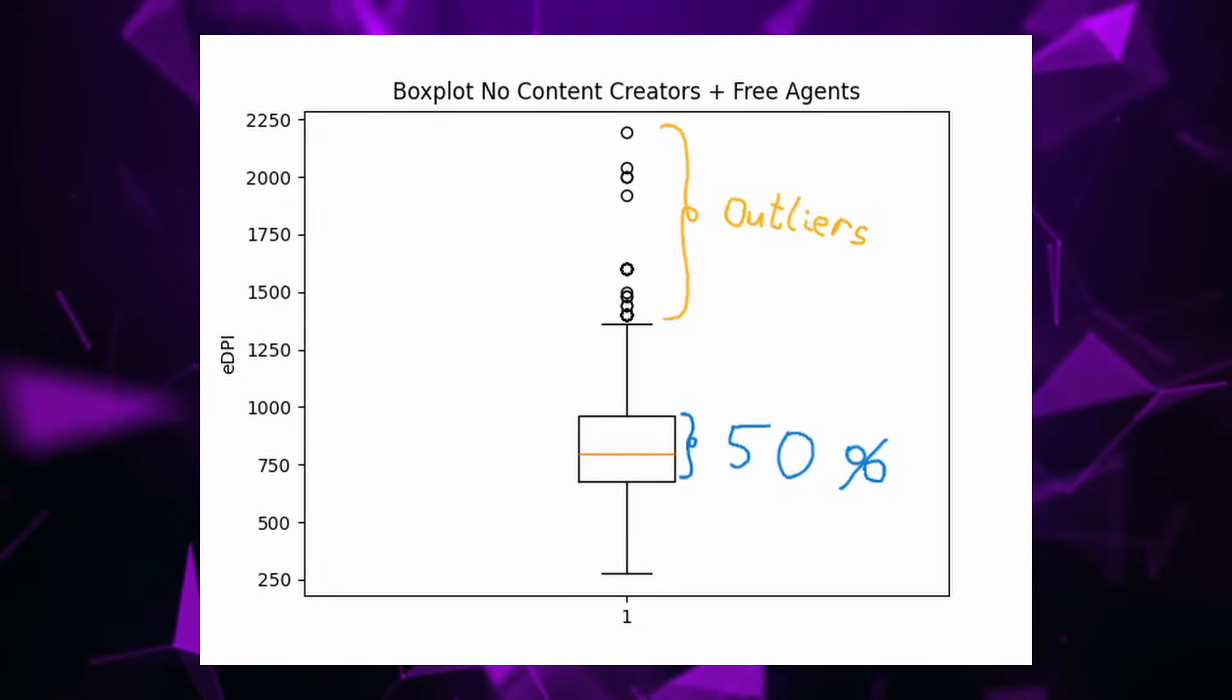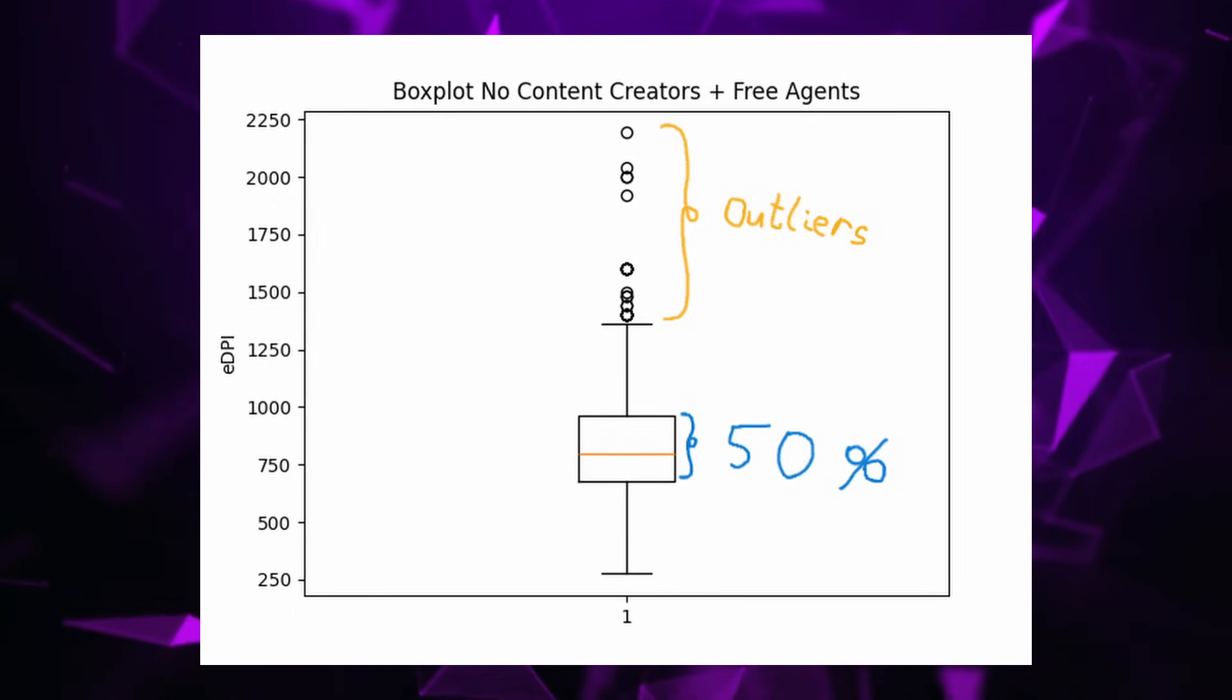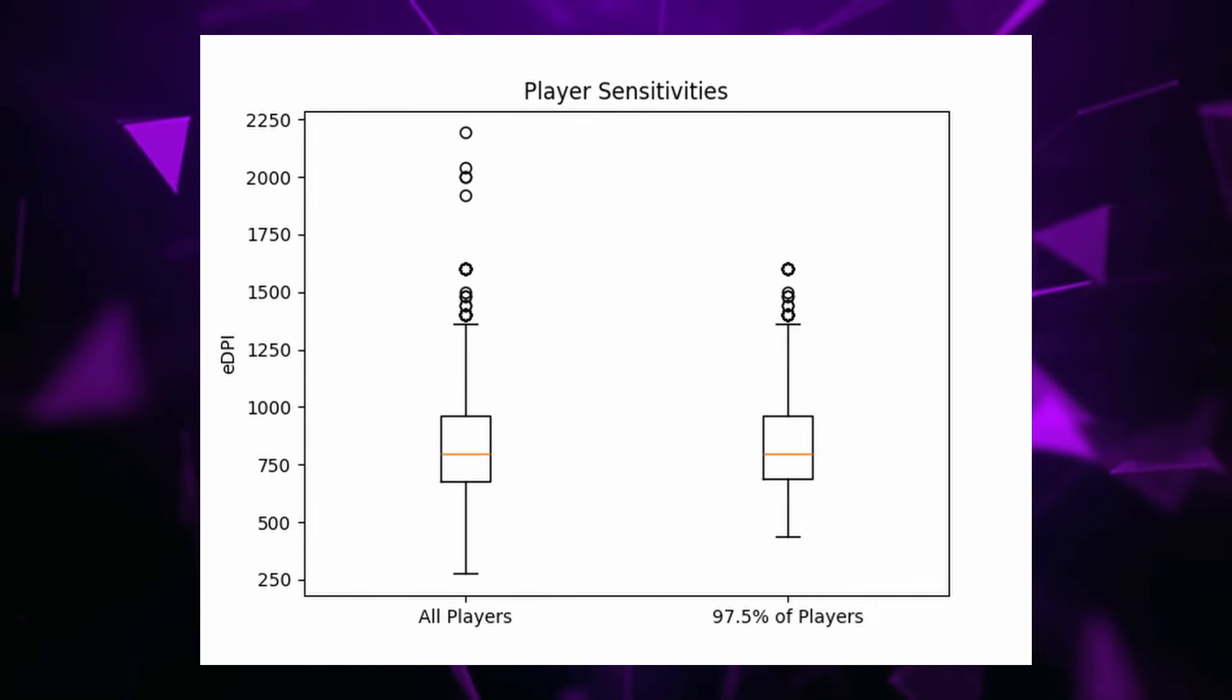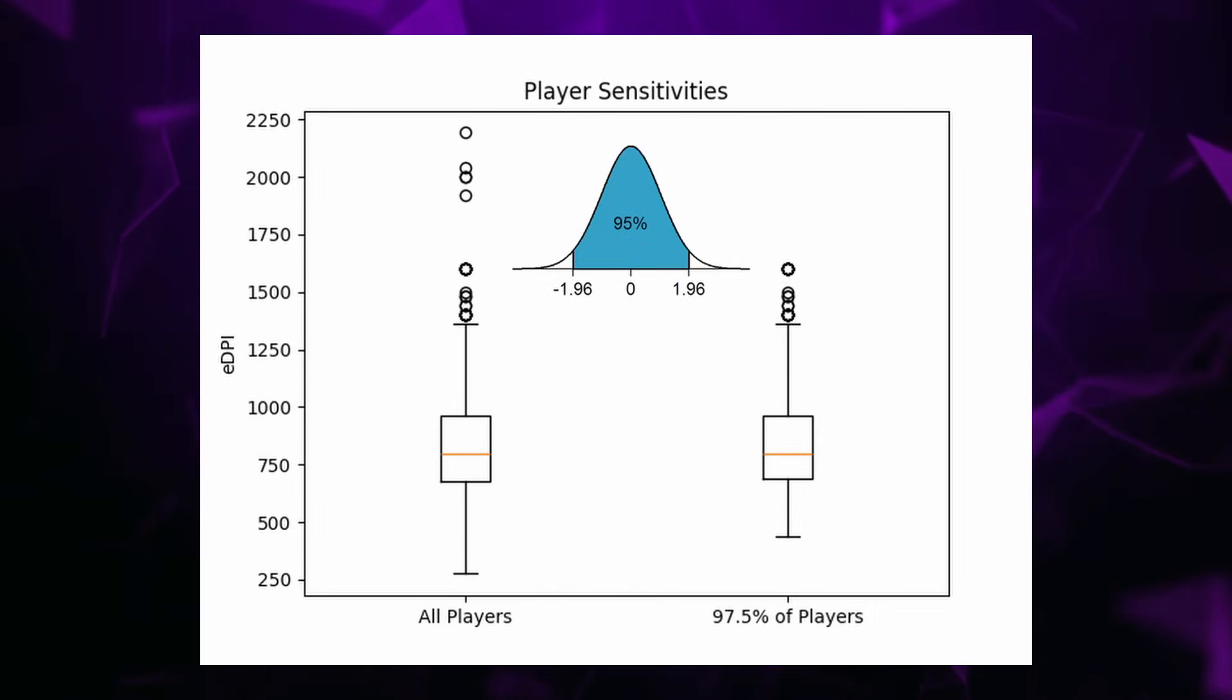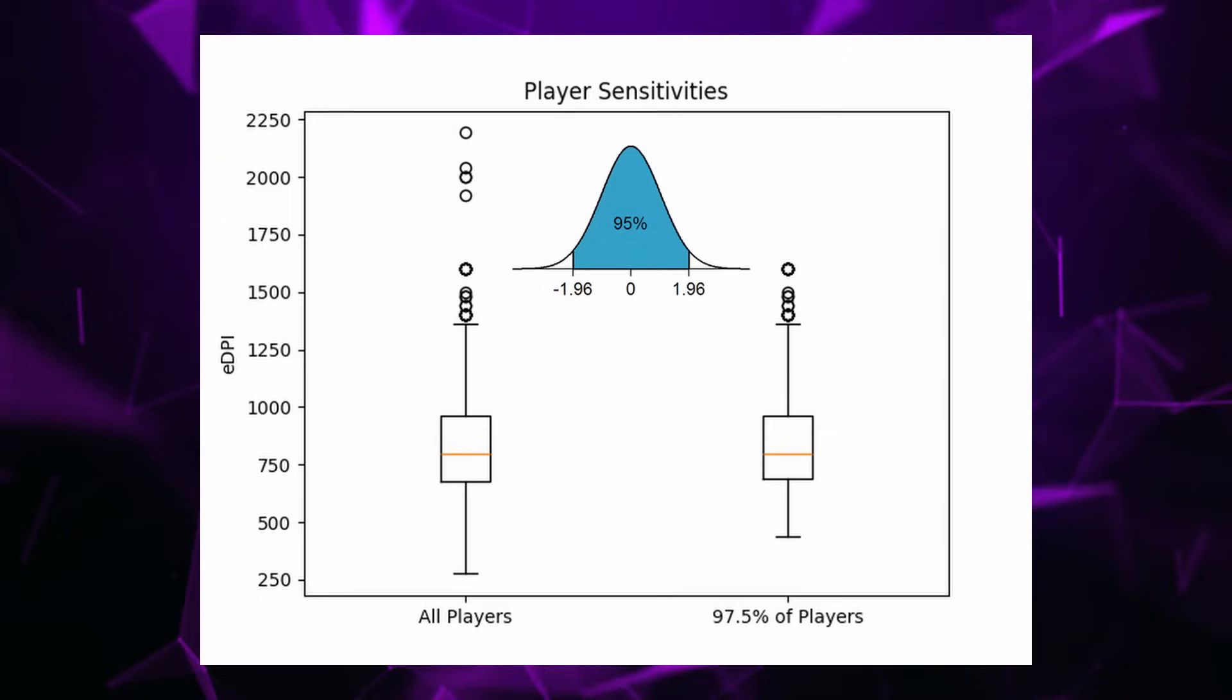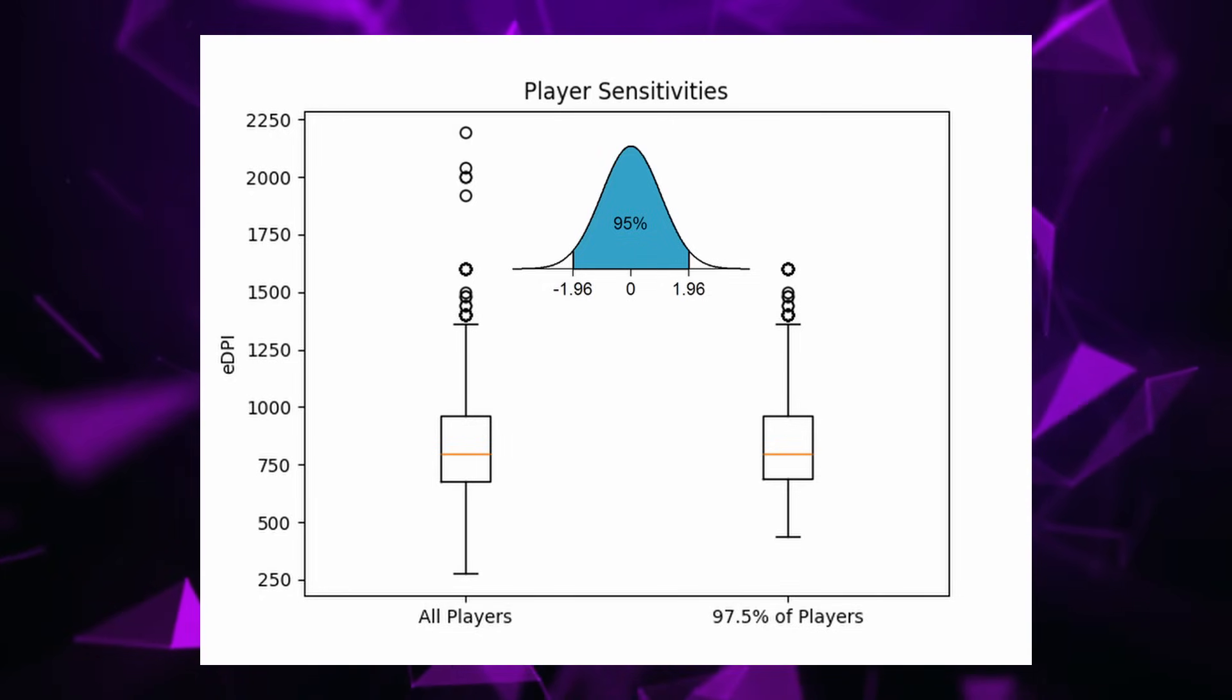What we can see here is some heavy outliers towards the upper end, which prompted me to pre-process the used dataset to only take the 97.5th percentile into consideration or, in other words, the range of values where approximately 95% of sensitivities are falling into. So, basically just another box of a much larger boxplot. And this made the results a lot more digestible.